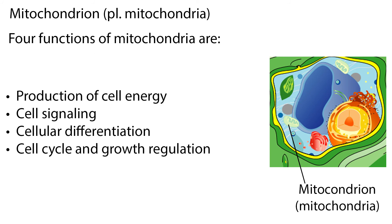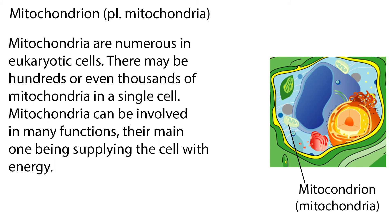Here are four functions of mitochondria: the production of cell energy; cell signaling, how communications are carried out within a cell; cellular differentiation, the process whereby a non-differentiated cell becomes transformed into a cell with a more specialized purpose; and cell cycle and growth regulation, the process whereby the cell gets ready to reproduce and reproduces. Mitochondria are numerous in eukaryotic cells, and their main function is supplying the cell with energy.